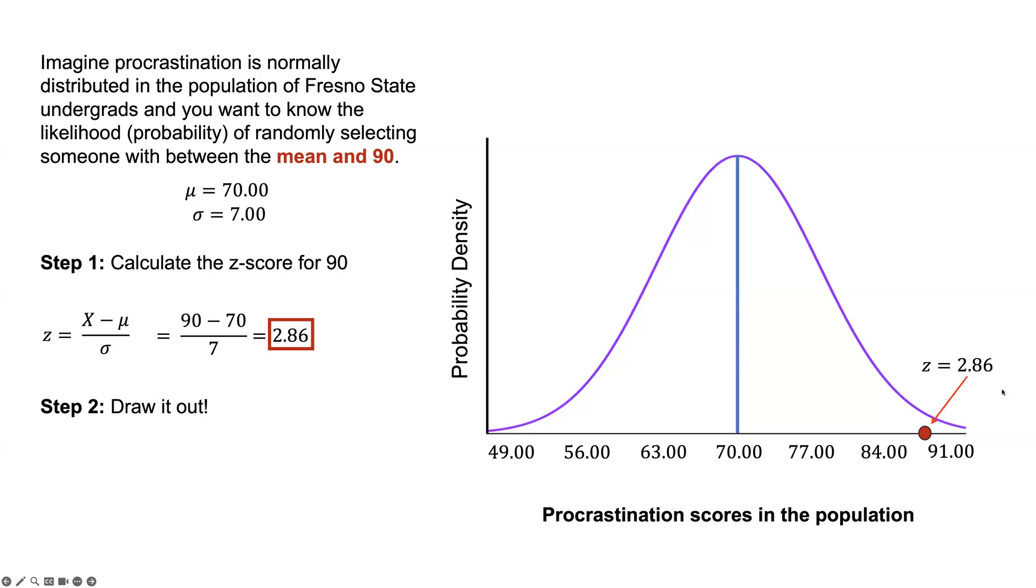We could also look at randomly selecting someone with a score between the mean and 90. Calculate the z-score for 90. We have that, the 2.86. We're going to draw it out. We're looking at the same score, but now we're actually looking from the mean to the score. We're no longer going to include this half that we are not shading. We're looking from 70 to 90.